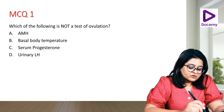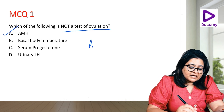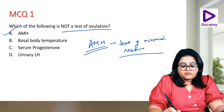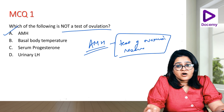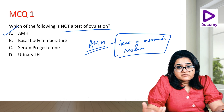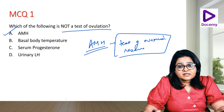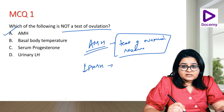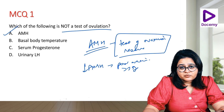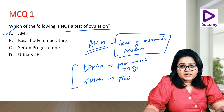MCQ: Which of the following is NOT a test of ovulation? AMH, basal body temperature, serum progesterone, or urinary LH? The correct answer is AMH. Anti-Müllerian hormone is a test of ovarian reserve, not of ovulation — this is very important to understand. A test of ovarian reserve tells us how many follicles are remaining in the ovary. Low AMH means poor ovarian reserve, usually seen in women over 35. High AMH is seen in PCOS where there are many follicles.